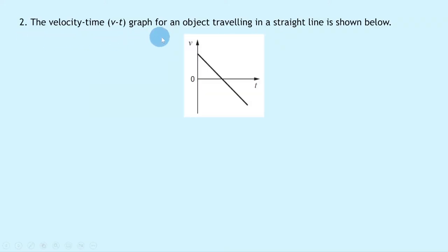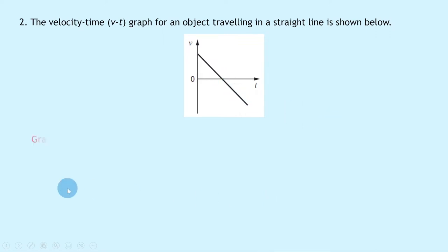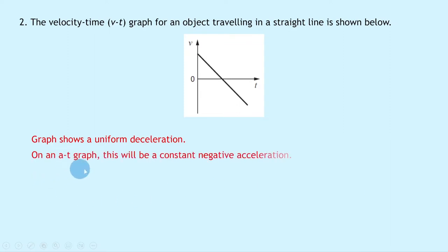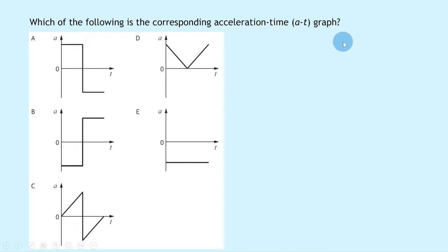Question 2 says the velocity-time graph for an object traveling in a straight line is shown. We start at a non-zero positive velocity and the object slows down over time until it reaches 0 m/s, then starts speeding up in the opposite direction. The graph shows a uniform deceleration. This is the velocity-time graph for an object thrown upwards into the air and then falling back down, which is why we have this change in direction going from the positive to the negative side of the y-axis. Which of the following is the corresponding acceleration-time graph?